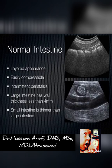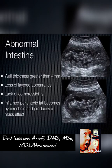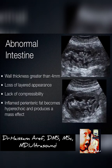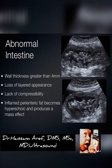Large intestine has wall thickness up to 4 millimeters. Small intestine is less than that — somewhere between 3 and 4 millimeters. If you ever have wall thickness greater than 4 millimeters, no matter what you're looking at, that's an abnormal disease state of that particular bowel, whether it's colitis or something else. The wall extends from the outer rim down to where the lumen is — usually air — and in normal individuals less than 4 millimeters is the norm.